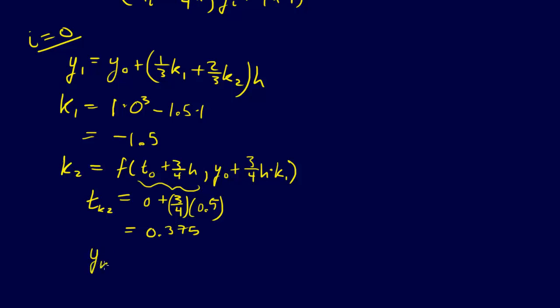And then we have our Y, I'll just call it Y_{K2}. The Y we need for computing K_2 is going to be Y_0, so that's 1 plus 3/4 times H, which is 0.5, times K_1, which is minus 1.5. And that's going to give us 0.4375.